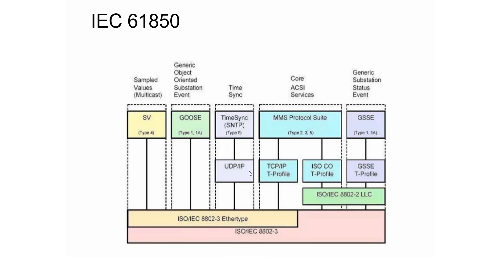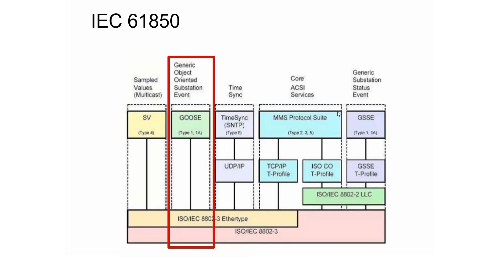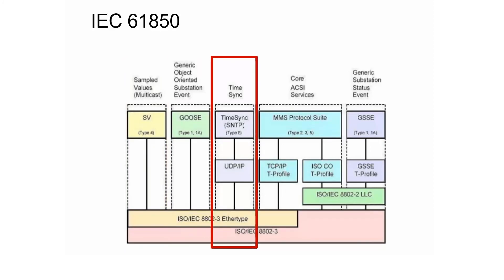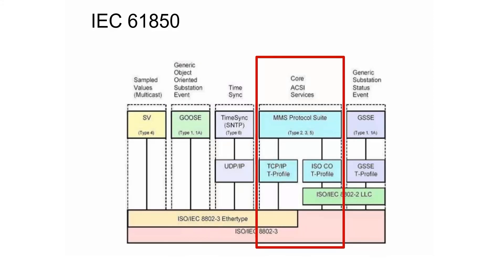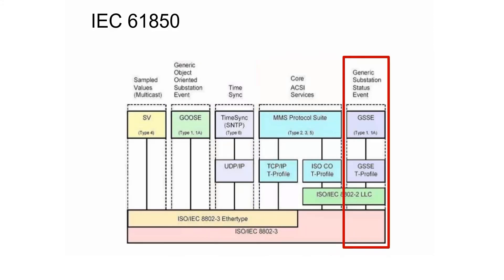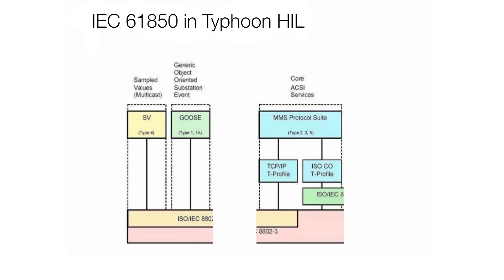If you look at the IEC 61850 standard, it defines five different protocols: sampled values, generic object-oriented substation event, time synchronization, manufacturing message specification, and generic substation status event. Not all of them are implemented in Typhoon HIL. Three out of these five protocols are implemented: sampled values, GOOSE, and MMS protocol.